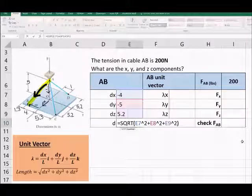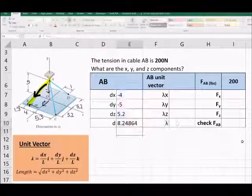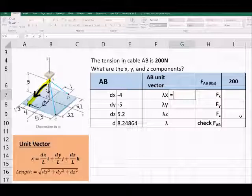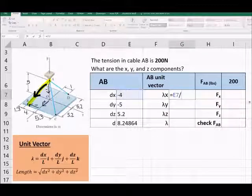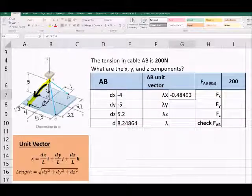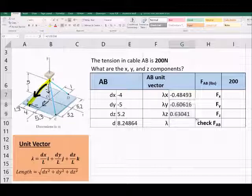So we can go ahead and use the cable to figure out what our unit vector is. So here's our unit vector. We're going to be getting the ratio of dx to the overall length. I'm adding dollar signs here to hold this cell constant. So I can copy this equation down and dx, dy, dz will update, but the overall length will stay the same in the denominator.